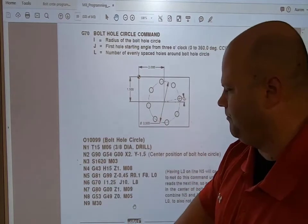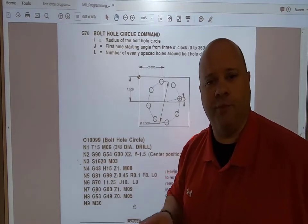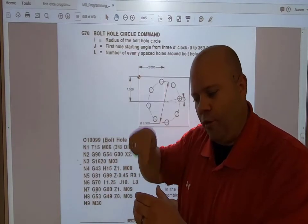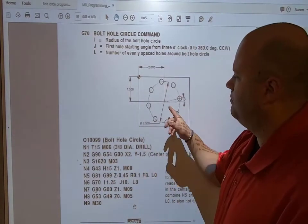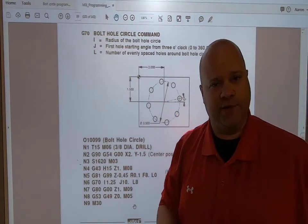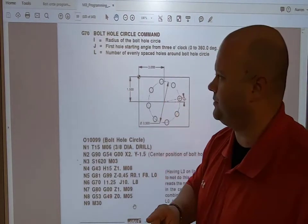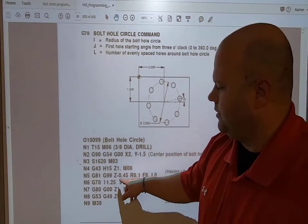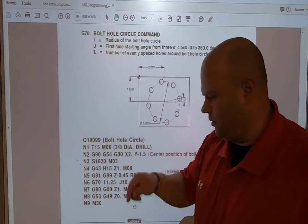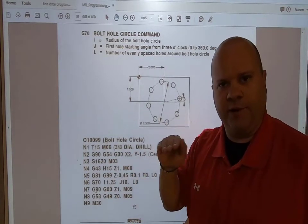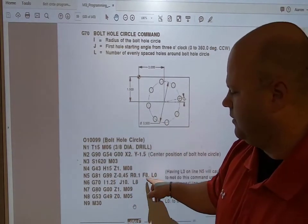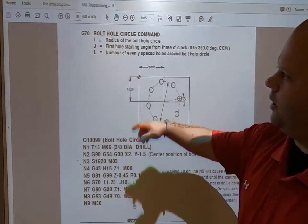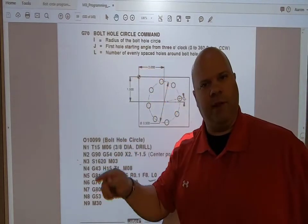Here he's got a G81, that's our drill canned cycle. Remember when you activate a drill canned cycle, the first thing it's going to do is drill a hole right where it's at, but we don't want a hole in the center of our part. G99 is our reference return.